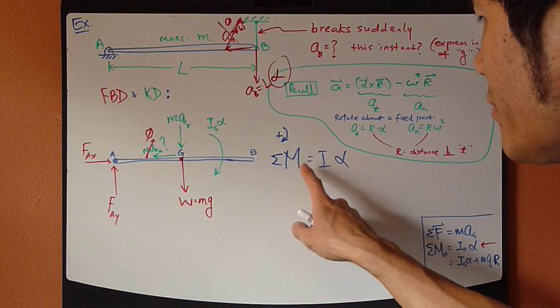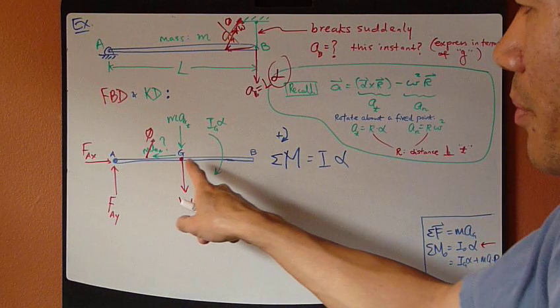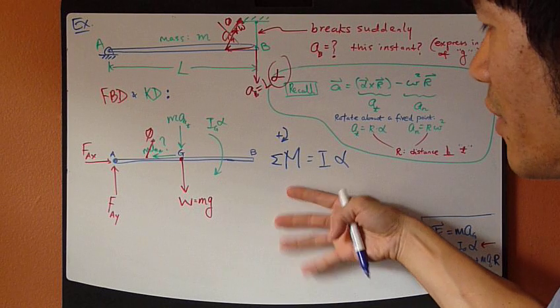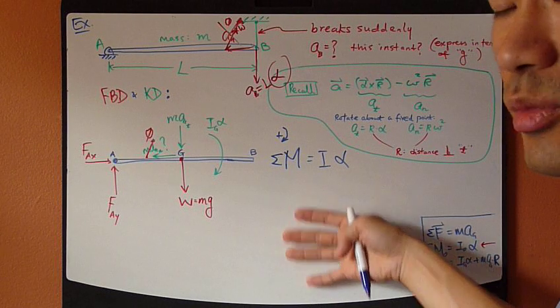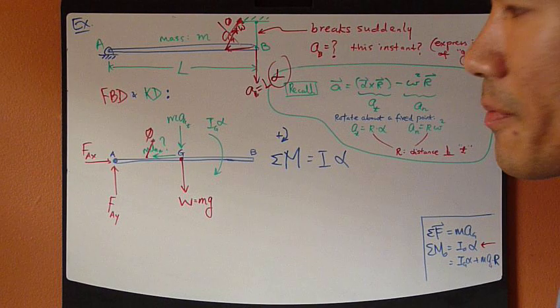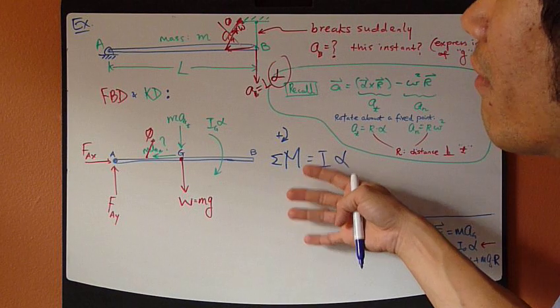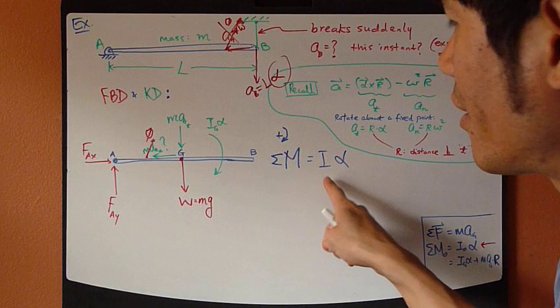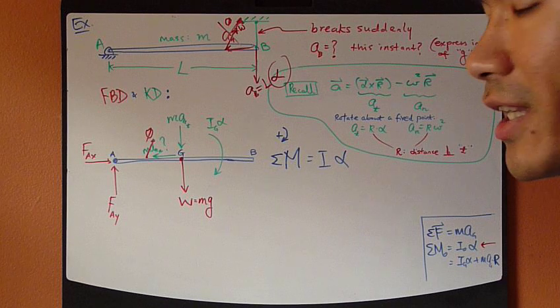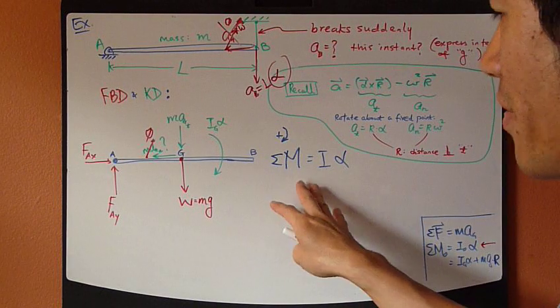However, the difference is, depending on the point you choose, your solution might be very short or it could be extremely long. Well, we like short answers. Now, choosing a point. Now, choosing a point or choosing the right point could be the key to the success of this Newton's second law method.